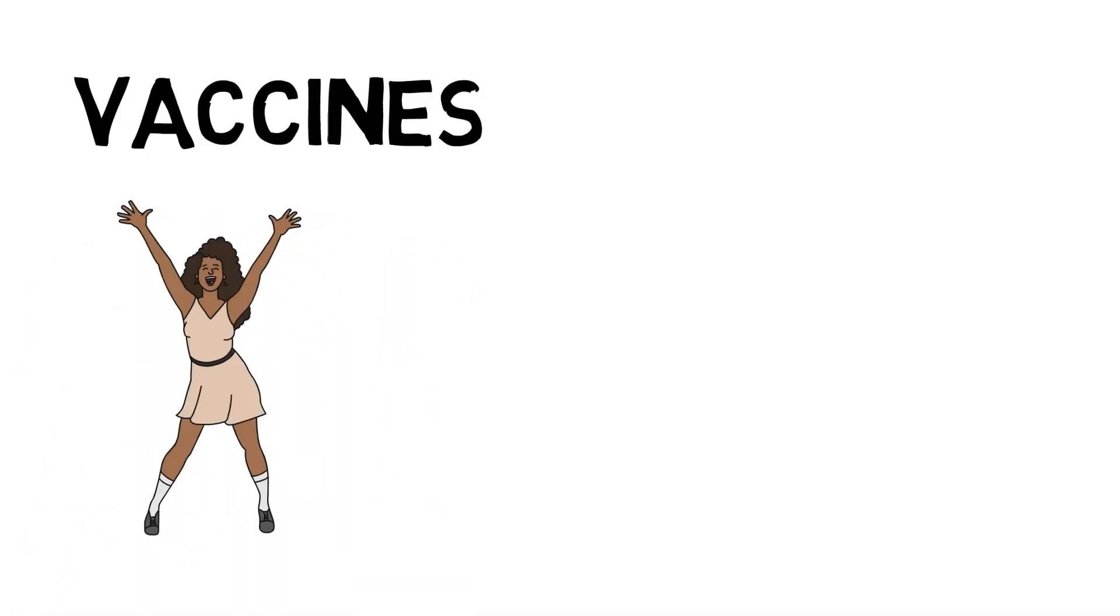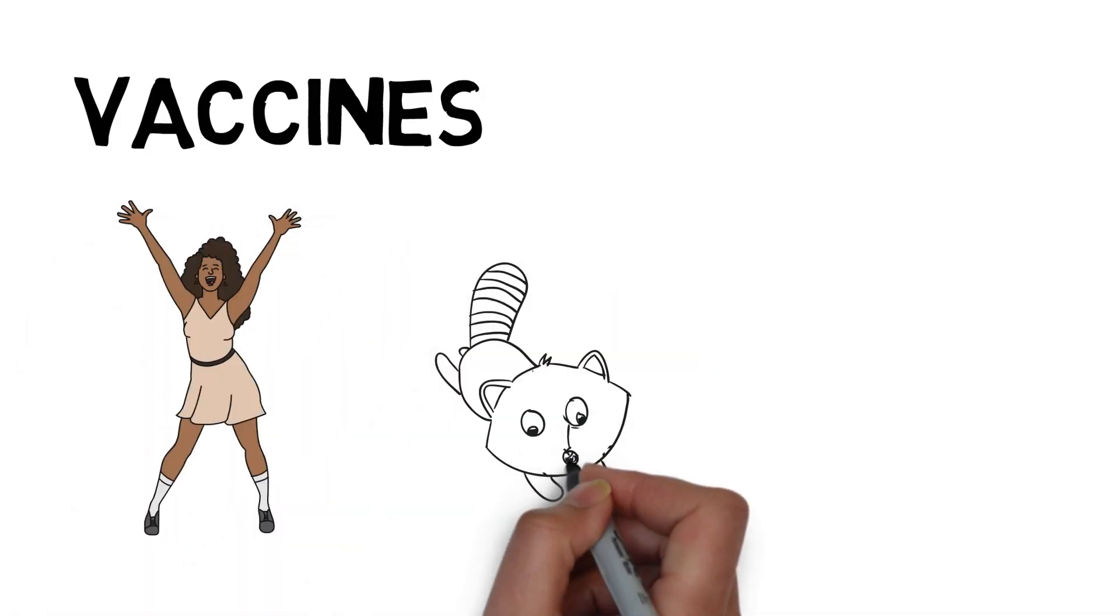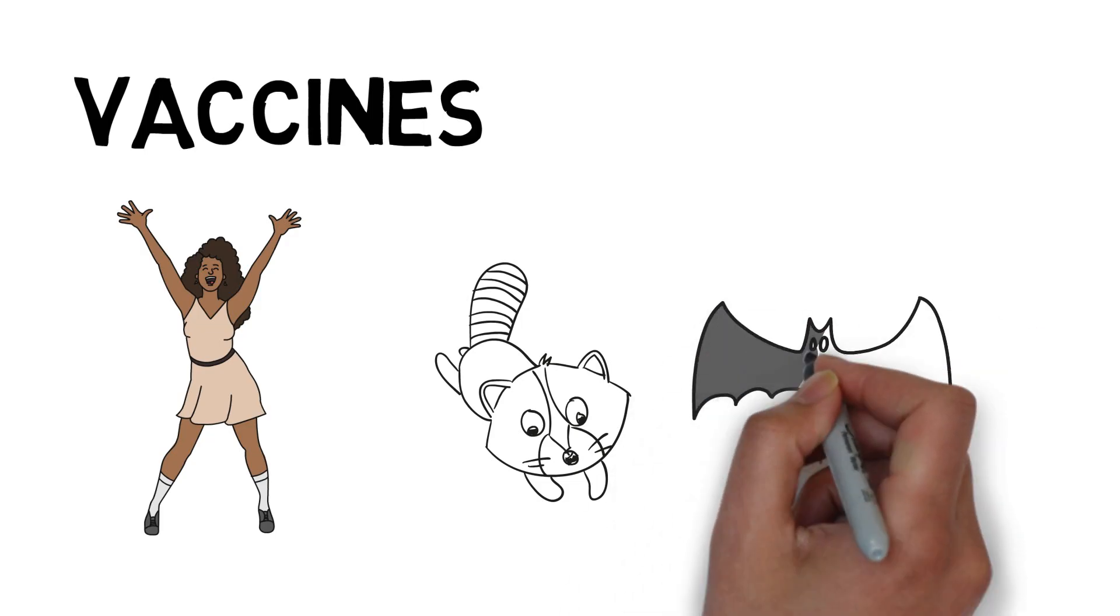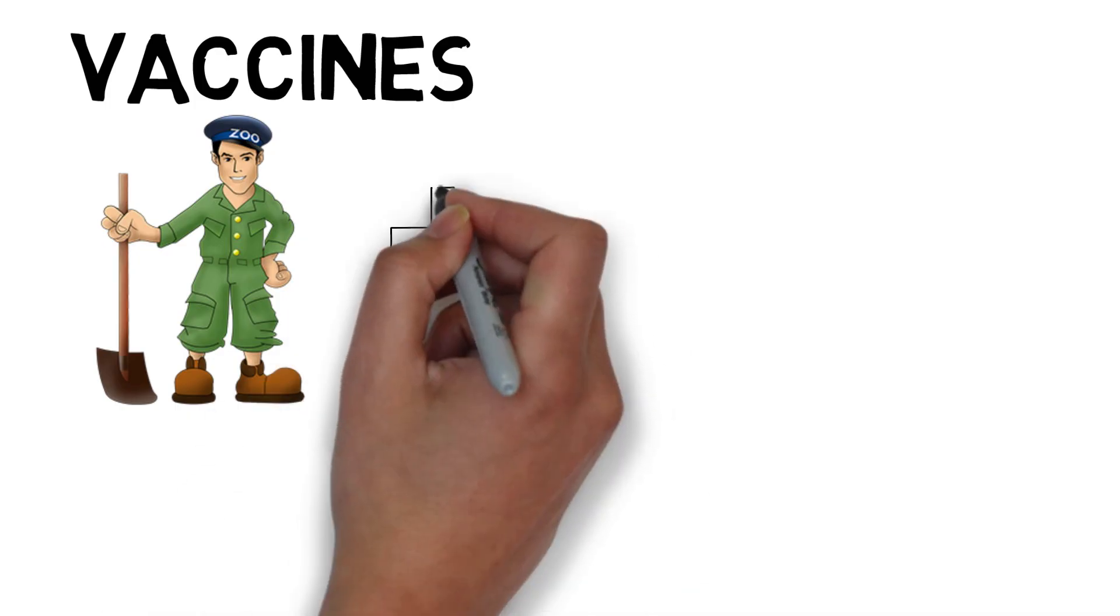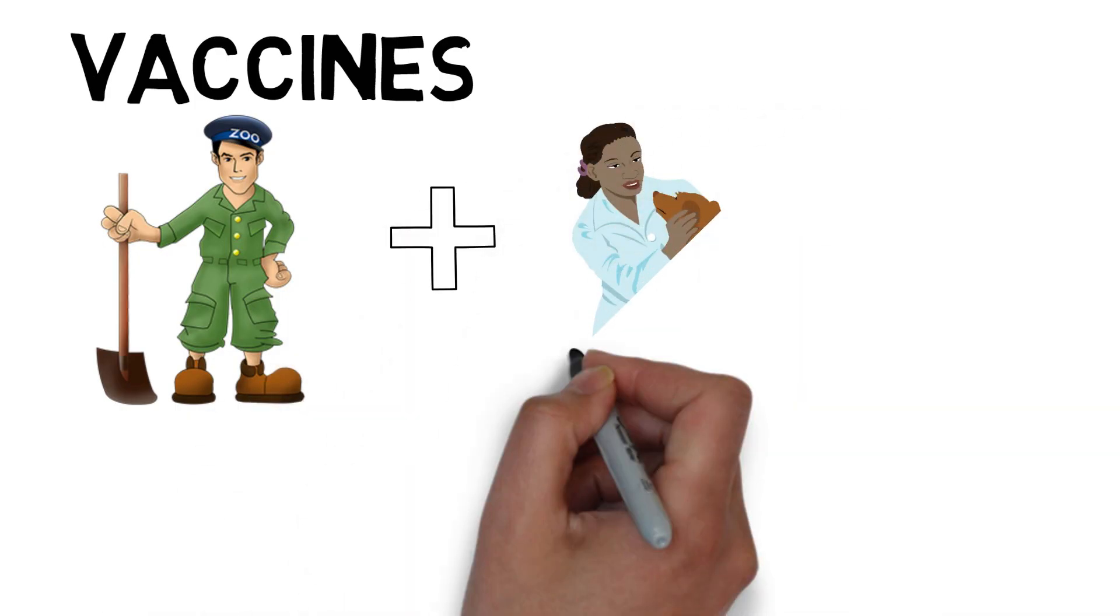These vaccines can be administered both to animals and humans to reduce the spread of viral infection. Workers in rabies-prone environments are recommended to vaccinate themselves regularly, such as zookeepers and vets.